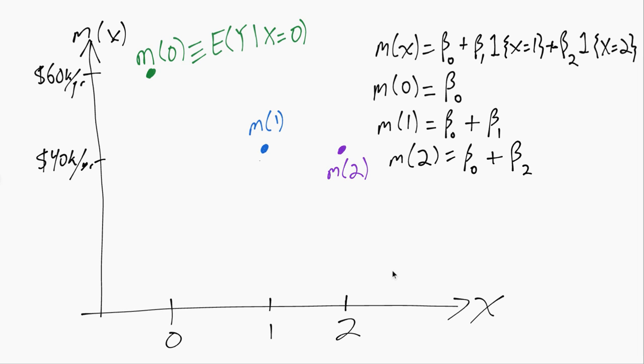We can also do some arithmetic to solve for beta 1 and solve for beta 2. If we subtract the first line from the second line, we'll have beta naught plus beta 1 minus beta naught, which is beta 1.